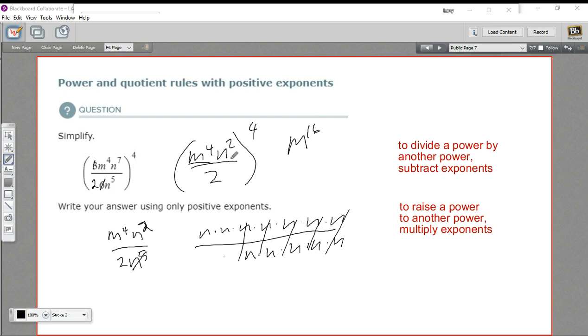I'll do the same thing to my n part now. n squared to the fourth power is n to the two times four power, or n to the eighth power.